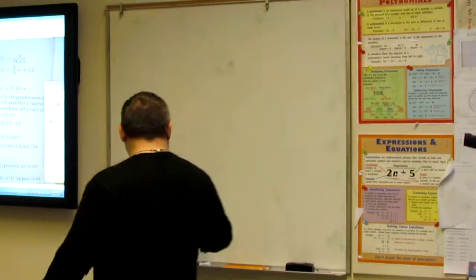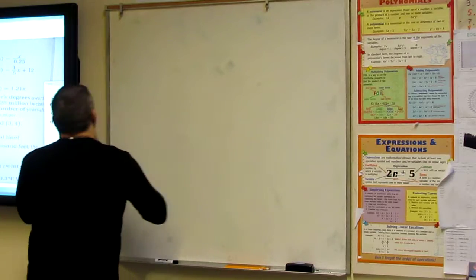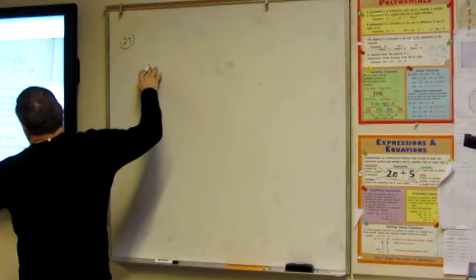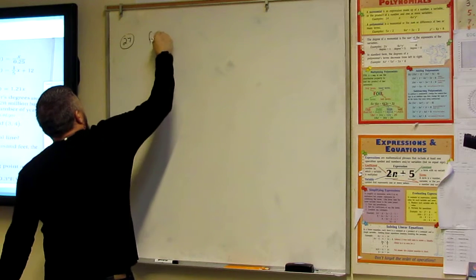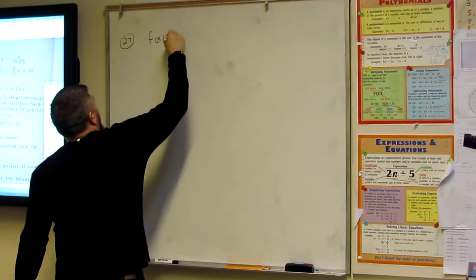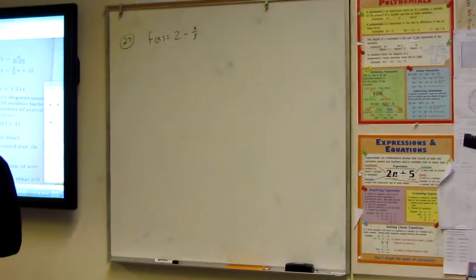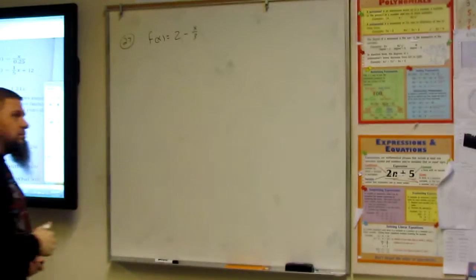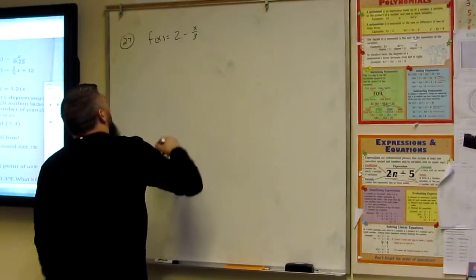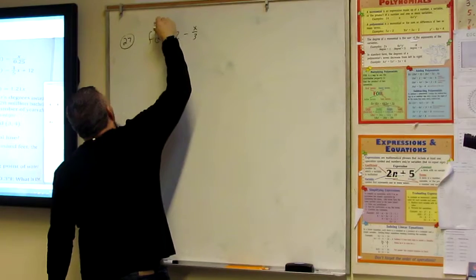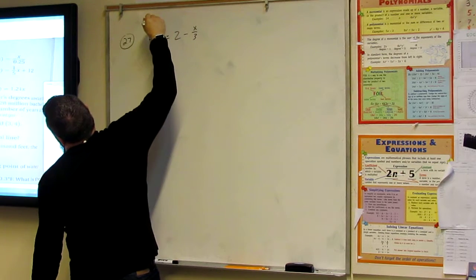Alright, 27 is f of x is equal to 2 minus x over 3, okay? I'm going to make that look a little better. Because first of all, we have to find the inverse, is that what it said?